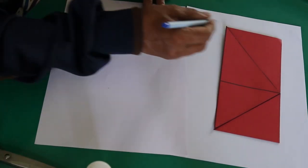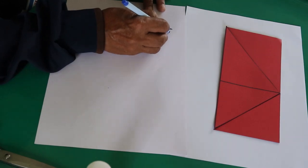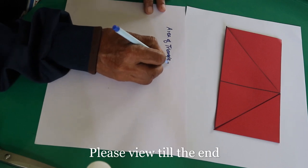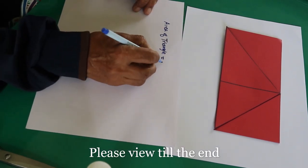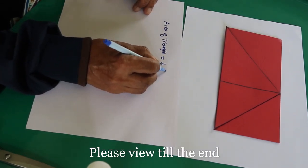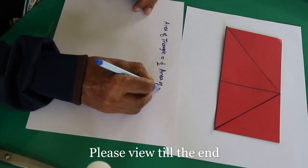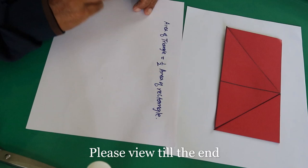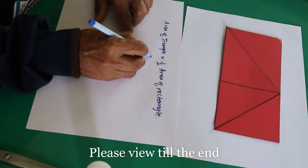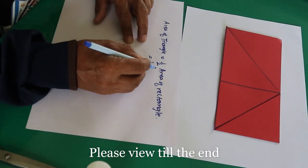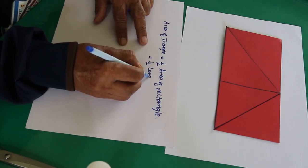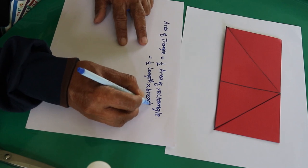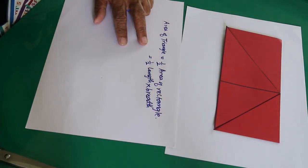And that one making the rectangle. And write it here. You have area of triangle equals to half of the area of rectangle. And that is half rectangle, the area length into breadth. Length into breadth.